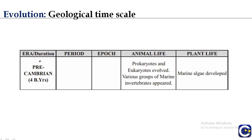In the geological time scale table, you can see the era, duration of earth history, periods (further divided into epochs), and descriptions of animal and plant life that originated in each era and period. The first era — the Pre-Cambrian — lasted 4 billion years, during which prokaryotes and eukaryotes evolved, various forms of marine invertebrates appeared, and marine life developed.